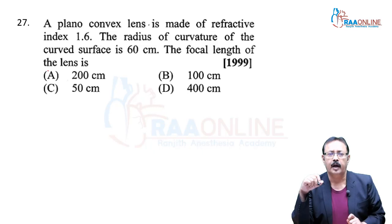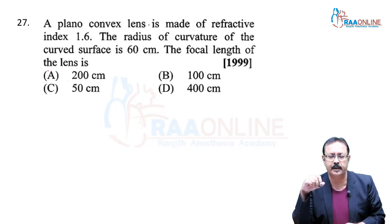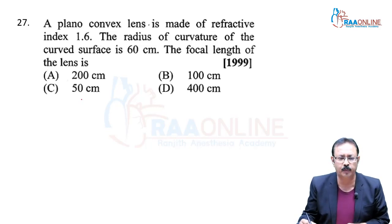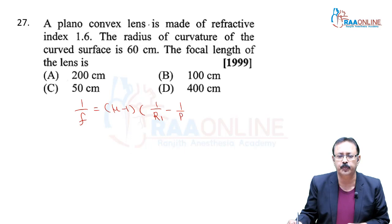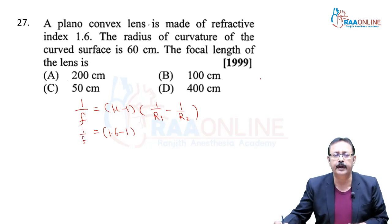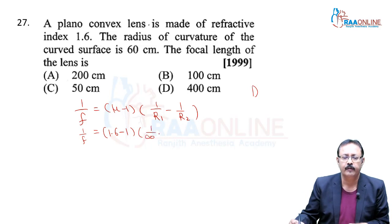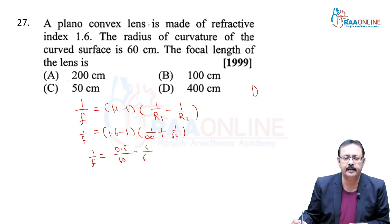Next, 1990 APMT. A plano-convex lens is made of refractive index 1.6. The radius of curvature of the curved surface is 60 cm. The focal length of the lens: using the formula 1/F = (μ-1)(1/R1 - 1/R2), μ = 1.6. For a plano-convex lens, the first surface is plane (R = infinity), second surface is convex (R = -60, so it becomes +1/60). We get 1/F = 0.6/60 = 1/100. So F = 100 cm. We go with option D.